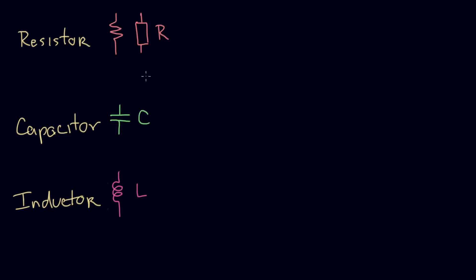Each of these components has an equation that relates the voltage to the current. I want to label the voltages and currents using a very important convention for drawing circuits. When we talk about the voltage on a component, we label it plus, minus, V. We draw the current going in — and the key point is that the current goes into the positive terminal. We'll be very consistent about this, and that's going to keep us from making mistakes.